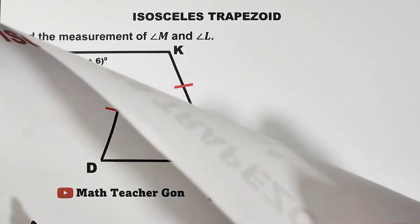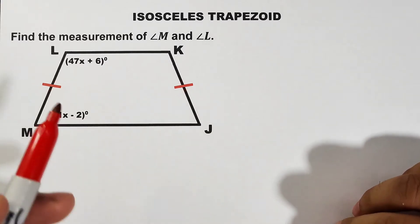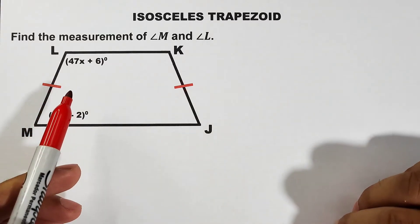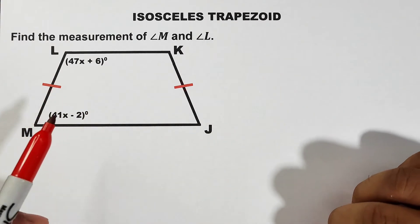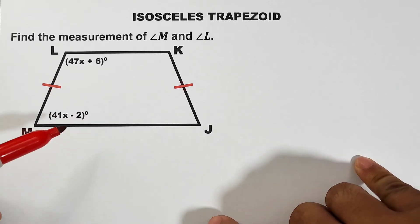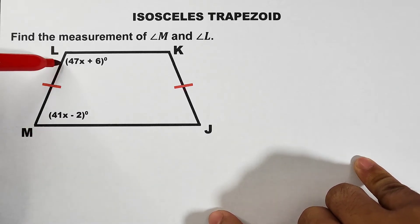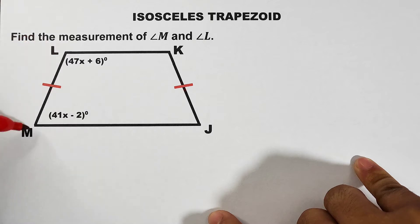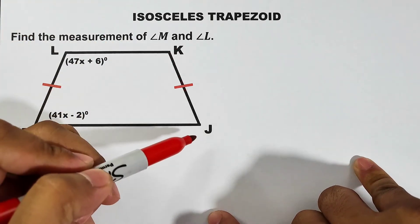Basically, we can define an isosceles trapezoid as a trapezoid with one pair of opposite congruent sides. The opposite congruent sides are the legs. We have leg LM and leg KJ.